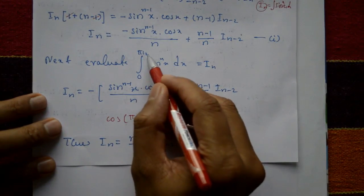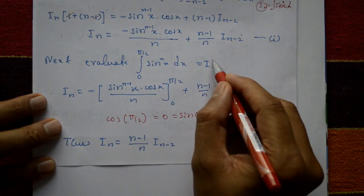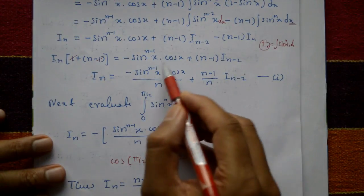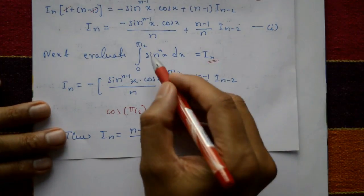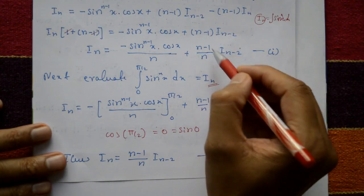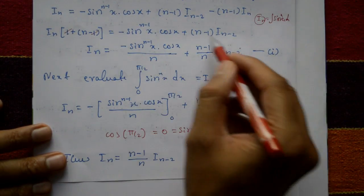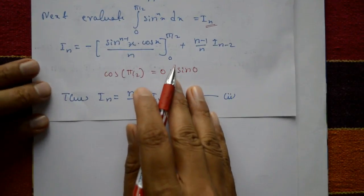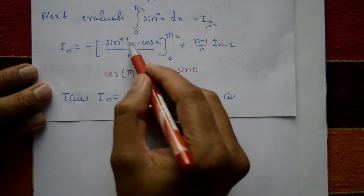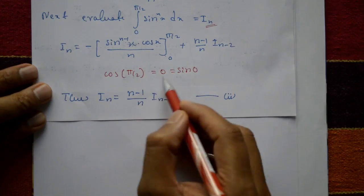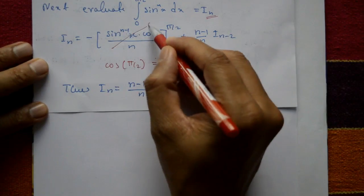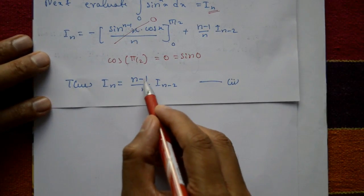Next, we evaluate the definite integral from 0 to π/2. Applying the limits to Equation 1: the first term −sinⁿ⁻¹x · cosx evaluated from 0 to π/2 gives 0, since cos(π/2) = 0 and sin(0) = 0. So the first term vanishes.